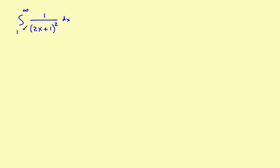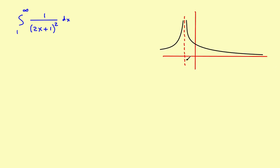The problem itself looks like this: find the integral from one to infinity of this expression. Before we get into the rules, let's quickly show what a graph of it would look like. It has an asymptote at x equals negative one-half, and the curve looks like this. Graphically, what you're doing is finding the integral from one — which we'll mark on the graph — going off to positive infinity. So you want to find the area under this curve.